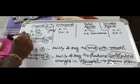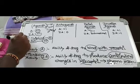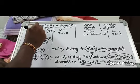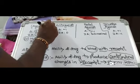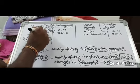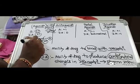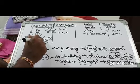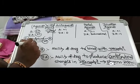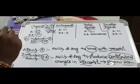Examples of agonists include morphine, which is an opioid analgesic acting at the mu receptor, and acetylcholine, which is a neurotransmitter acting at the muscarinic receptor.